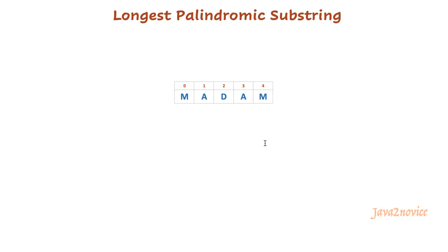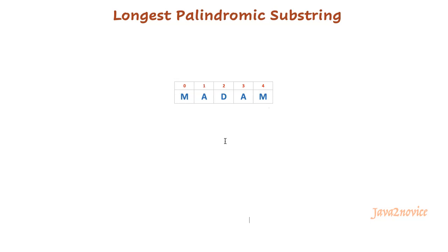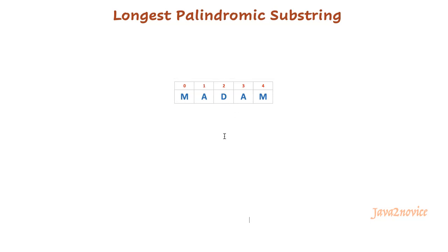That means the character at index 0 will be compared with the character at index 4. If both characters are matching, then we will compare the character at index 1 with the character at index 3, and so on. If all characters are matching, then it is said to be a palindrome.